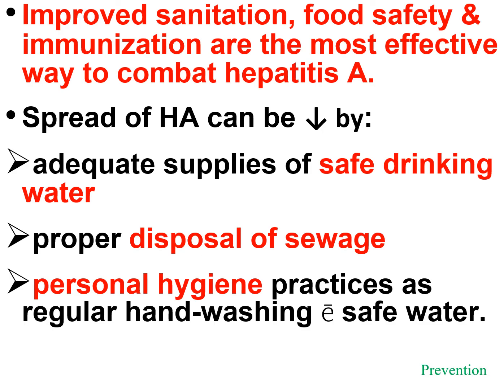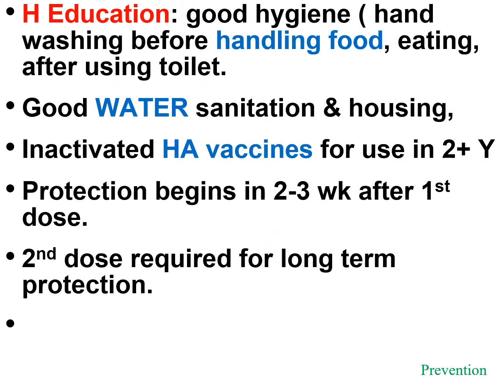Prevention of Hepatitis A: improved food safety and immunization are the most effective ways to combat Hepatitis A. Spread can be decreased by adequate supplies of safe drinking water, proper disposal of sewage, and personal hygiene practices such as regular hand washing with safe water. Health education about good hygiene includes hand washing before handling food, before eating, and after using the toilet. Good water sanitation and housing are also important.